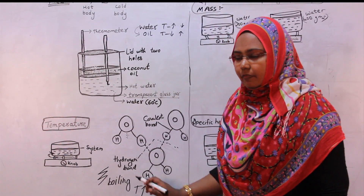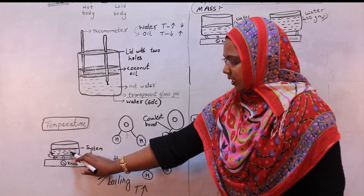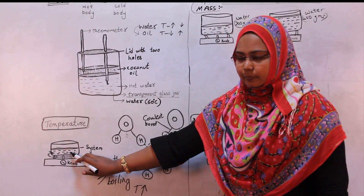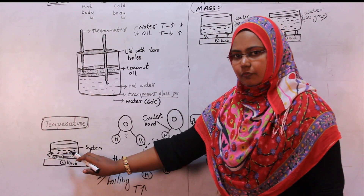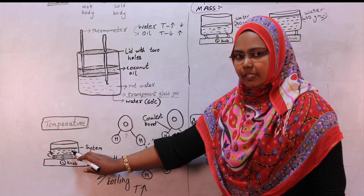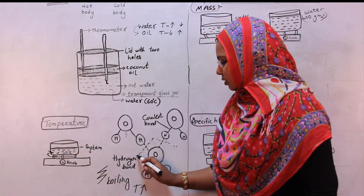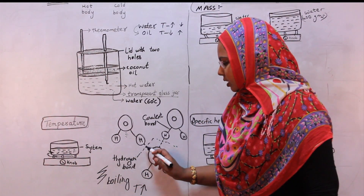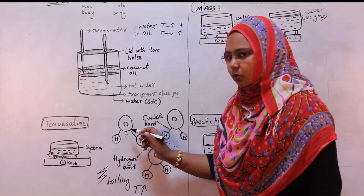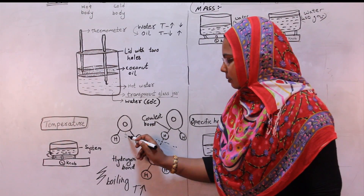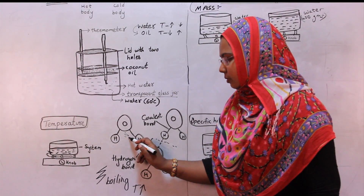Initially when we add the heat energy, there is no rise in temperature because at first the heat energy is used for breaking the hydrogen bonds. Once the bonds are broken, the energy goes to the molecules and helps in their rapid movement.